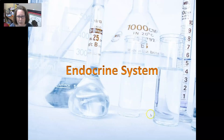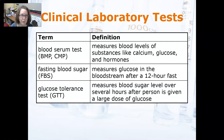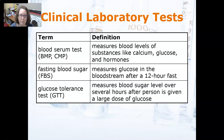Hi, this is Dr. A and we're going to look at diagnostic procedures of the endocrine system in this medical terminology video. We're going to mainly look at clinical lab tests. Clinical lab is my specialty, so I have a few comments. Blood serum is a type of sample, and then there are a bunch of different tests that we can do on blood serum.